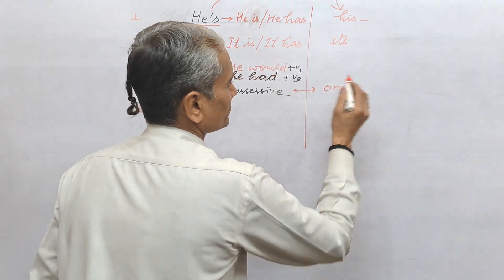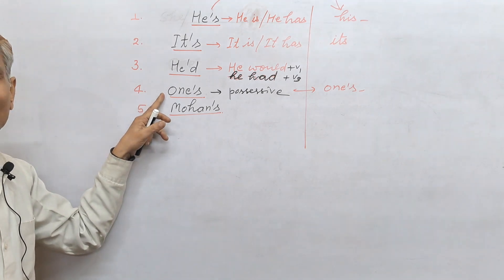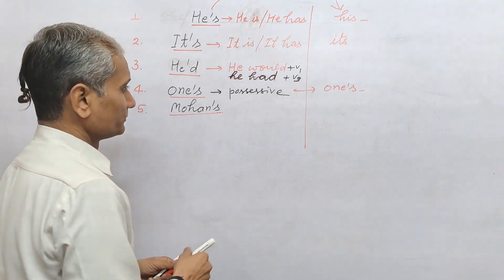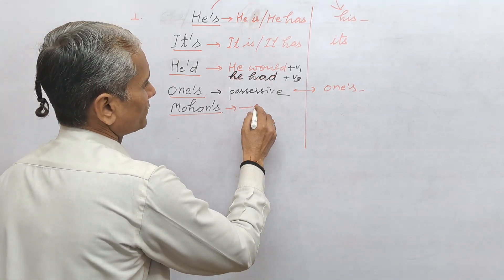Same. One here works as a name. Clear? Mohan's - it's also possessive. It's also a possessive.